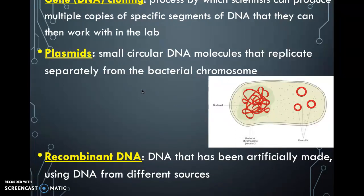Before getting into the details of genetic engineering using biotechnology, we need to understand some terminology. One key term is gene cloning — the process by which scientists produce multiple copies of segments of DNA to work with in the lab. It's important to note that the genome and DNA are extremely long, and not all DNA needs to be copied. A lot of the DNA in our nucleus is non-coding for protein synthesis, so only the coding parts need to be copied and worked with, depending on what the scientist is studying.